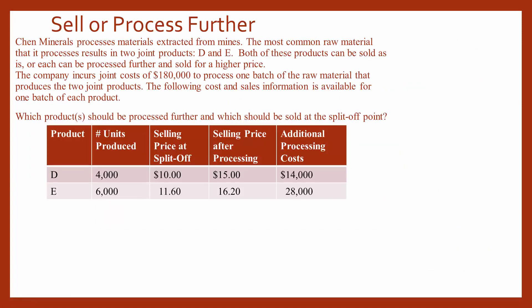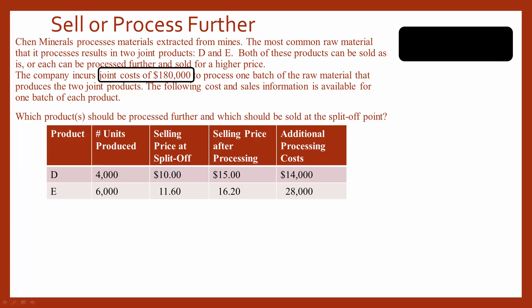Next, let's look at a joint products example. Chin Minerals processes materials extracted from mines. The most common raw material it processes results in two joint products, D and E. Both products could be sold as-is or could be further processed and sold at a higher price. The company incurs joint costs of $180,000 to process one batch of raw material to produce the two joint products. Those joint costs are not a relevant cost in our analysis — we do not include joint costs in our decision to sell or process further when we have multiple products.